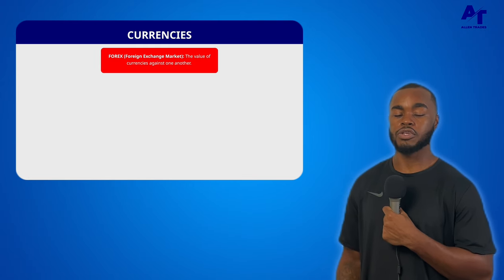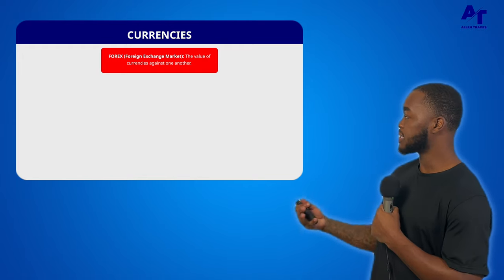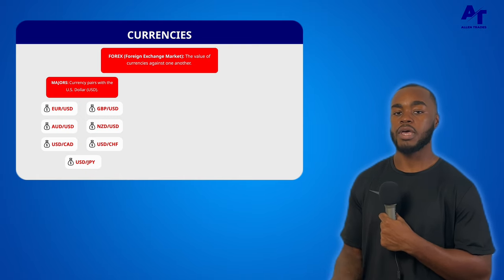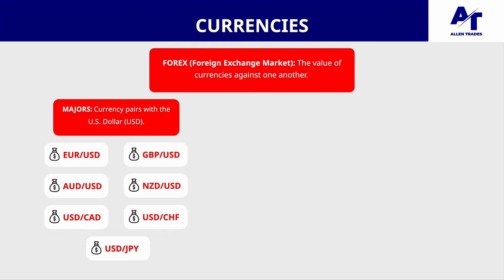We're going to cover the first four. Starting with currencies, also known as forex — it is the value of currencies against each other. We split those into two main categories. First, the majors: EUR/USD, AUD/USD, USD/CAD, USD/JPY, GBP/USD, NZD/USD, and USD/CHF.